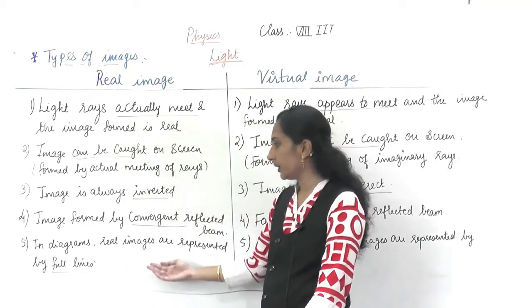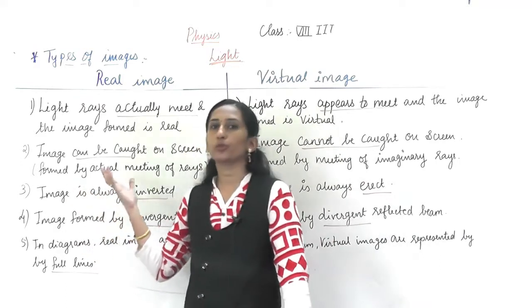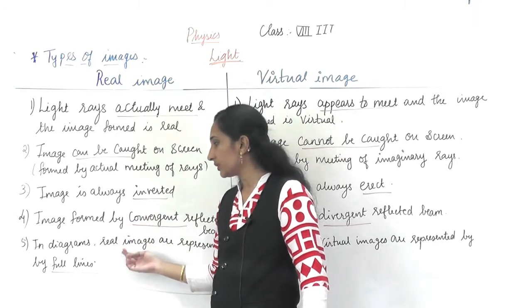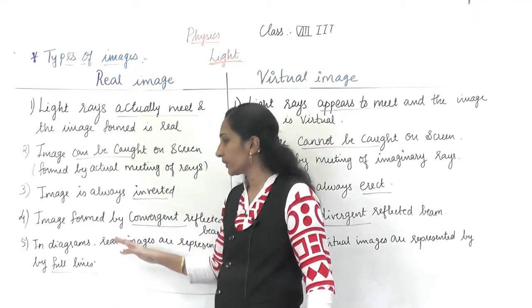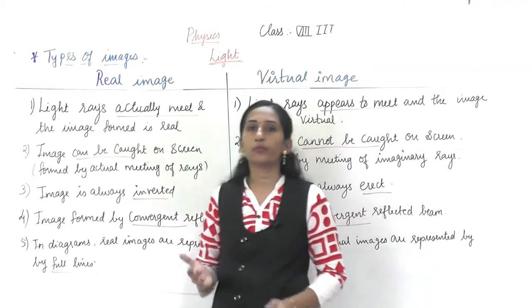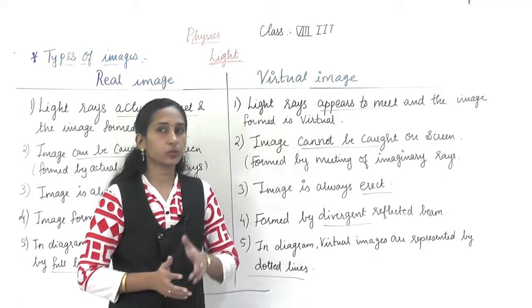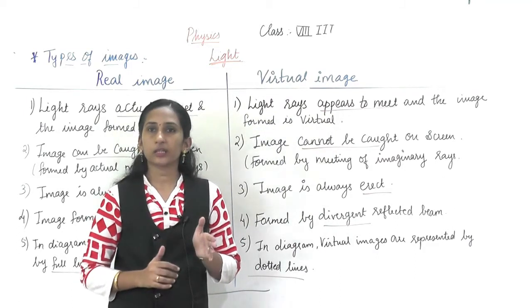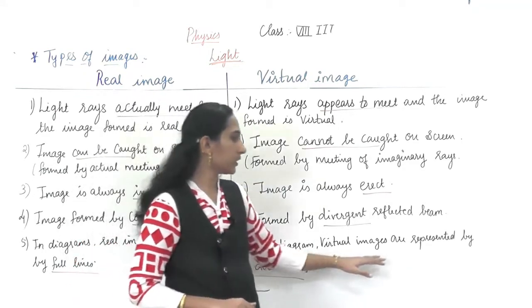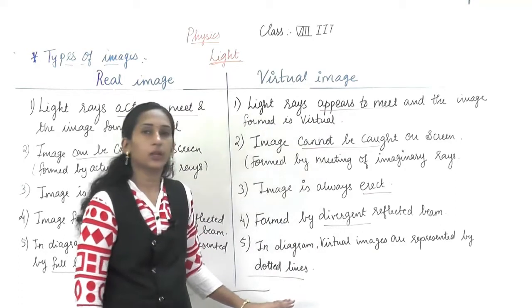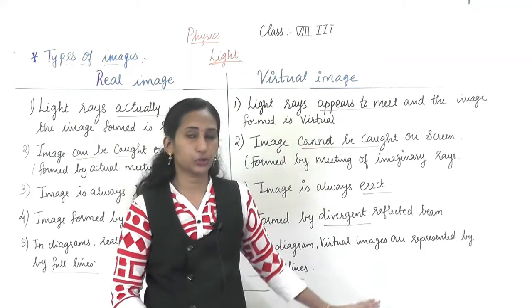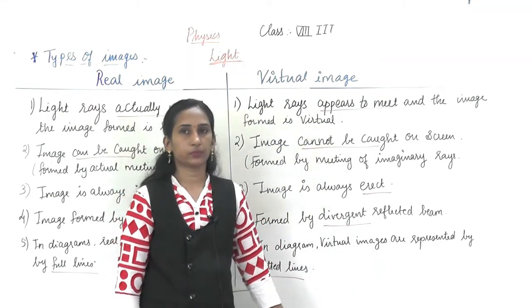The fifth difference relates to diagram conventions. In diagrams, a real image is represented by full lines — solid straight lines. A virtual image is represented by dotted lines, as shown in the diagram. When you draw dotted lines in a diagram, it indicates a virtual image.